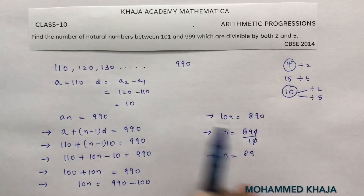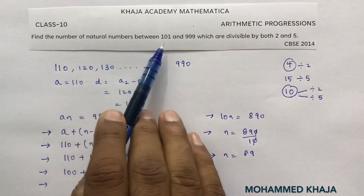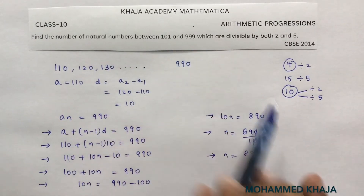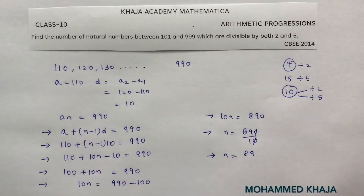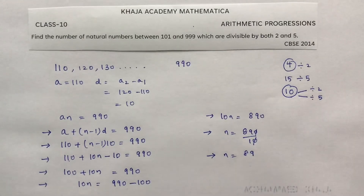So the number of natural numbers between 101 and 999 which are divisible by both 2 and 5 is 89.